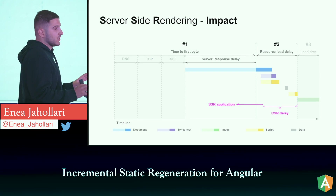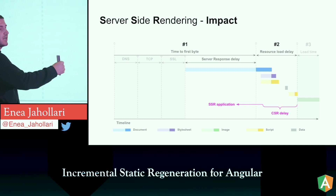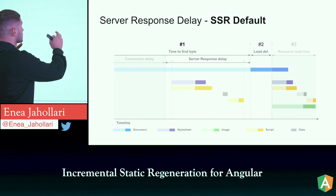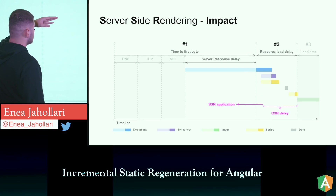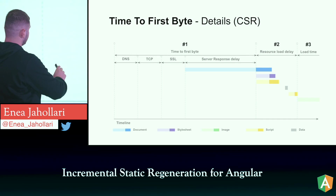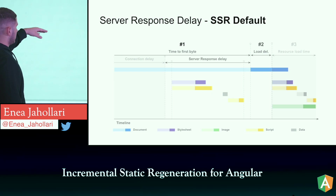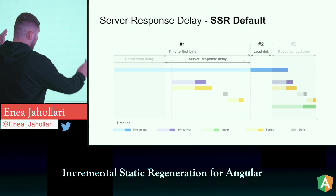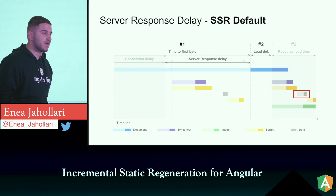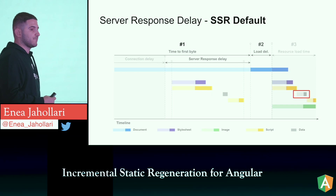When we move to server-side rendering, the work done in the browser moves to the server. We still have document, stylesheet, scripting, data, and other scripting. And there's a red box — that's data being fetched again. If we don't use transfer state, we're doing double fetching for every API call we make on the server.